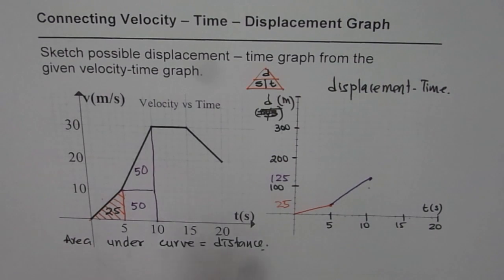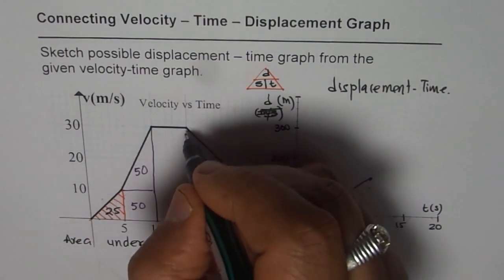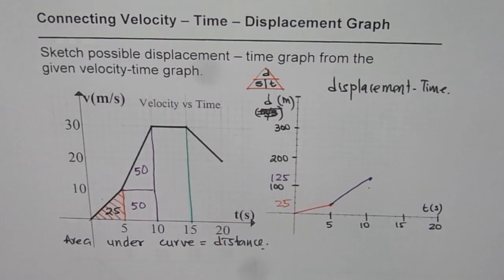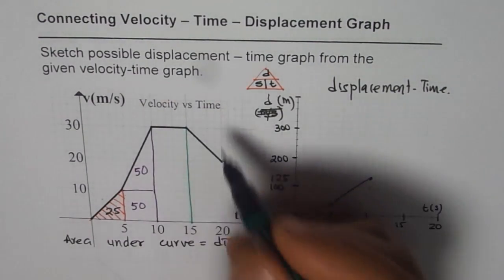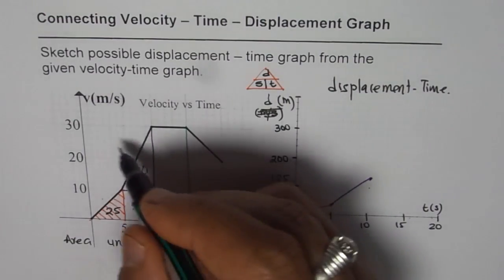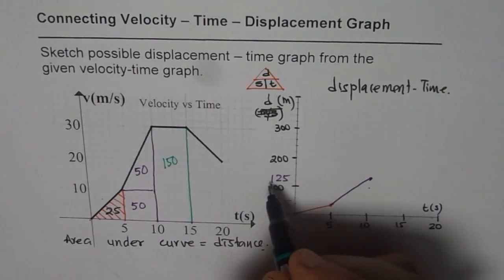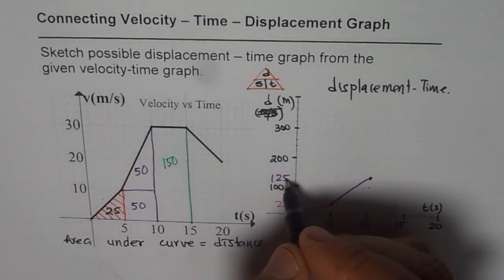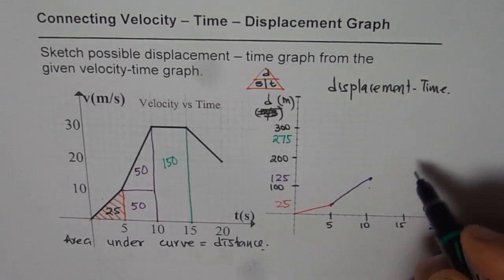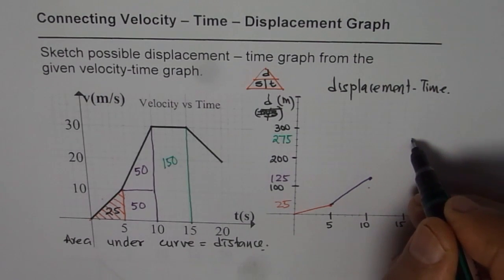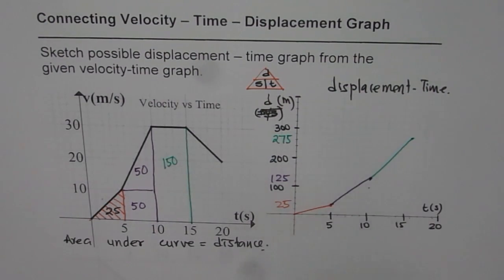Now the object moves at a constant speed of 30 meters per second for 5 seconds. Since it is constant and still positive, displacement continues to add in the same direction. The area is 30 × 5 = 150. Adding 150 to 125 gives 275 meters at t = 15 seconds. We connect those points.